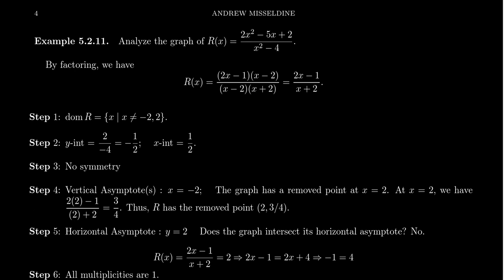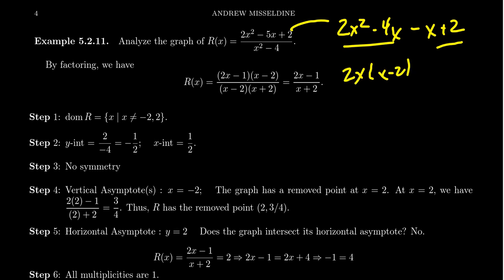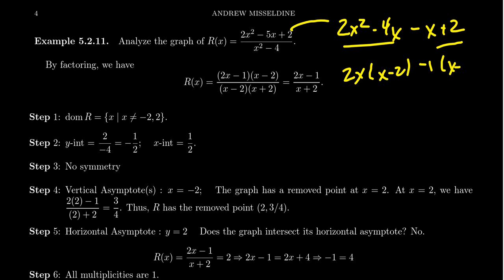The numerator is a little bit more challenging, but we can reverse-FOIL this thing. We take 2 times 2, that gives us 4. We need factors of 4 that add to be negative 5, so we can take negative 4 and negative 1. We then factor by grouping: 2x squared minus 4x minus x plus 2. From the first group, take out 2x, leaving x minus 2. From the second group, take out negative 1, leaving x minus 2. Since x minus 2 appears twice, we factor it out and get 2x minus 1 times x minus 2.